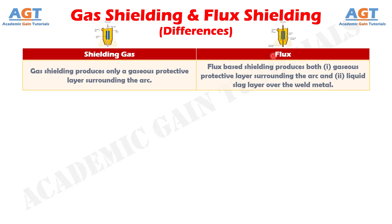Difference number 1: Gas shielding produces only a gaseous protective layer surrounding the arc, whereas flux-based shielding produces both a gaseous protective layer surrounding the arc and a liquid slag layer over the weld metal.